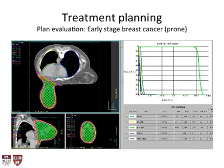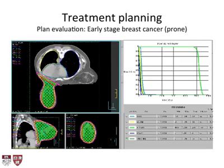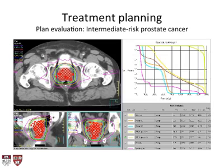In a prone breast treatment, the PTV achieves about 94-95% coverage at the prescription dose of 50 gray, with less lung dose than supine. The left lung and heart receive lower doses because the breast pulls away from the chest wall in the prone position, improving sparing of both structures. The color of the DVH contour always matches the corresponding isodose line.